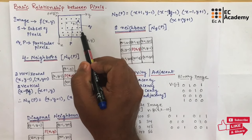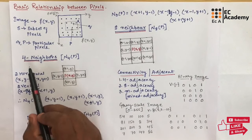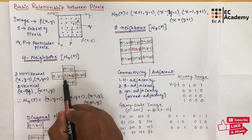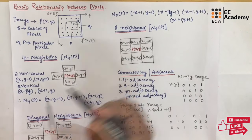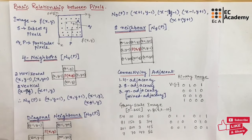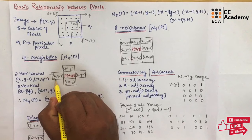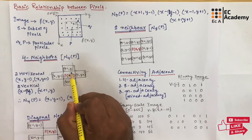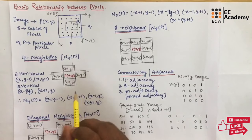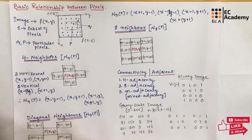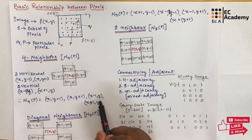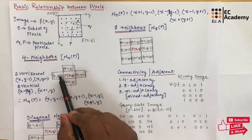P and Q are known as particular pixels. Now let us understand four neighborhood pixels, also known as four neighbors, represented as N4 of P. If we consider a pixel P with coordinates x comma y, it has two horizontal neighbors and two vertical neighbors, giving four neighborhood pixels overall. In the horizontal direction we have x comma y minus 1 and x comma y plus 1, and in the vertical direction we have x minus 1 comma y and x plus 1 comma y. So N4 of P equals these four coordinates.